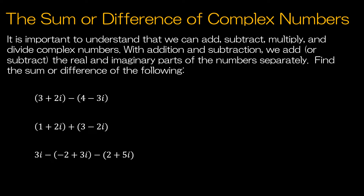You can show as much or as little work as possible. On this first question, I'm going to show a lot of work. I could rewrite this without the parentheses — this is how your textbook shows it. Since this is minus, writing without parentheses gives minus 4 and then minus negative 3i, so plus 3i. Your textbook shows rearranging to 3 minus 4, and then plus 2i plus 3i. We're going to take the real parts and combine real with real and imaginary with imaginary. So 3 minus 4 is negative 1, and 2i plus 3i is 5i.